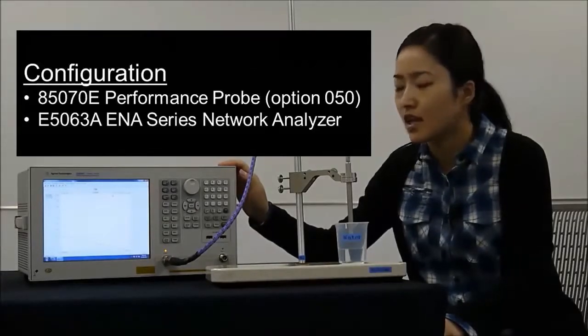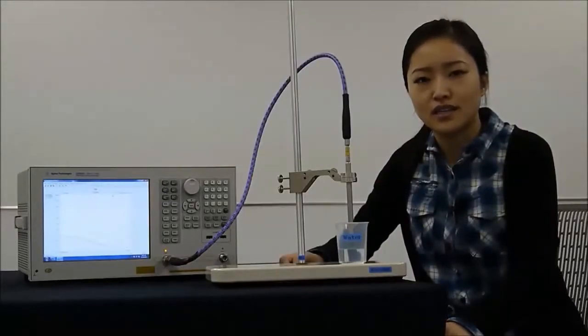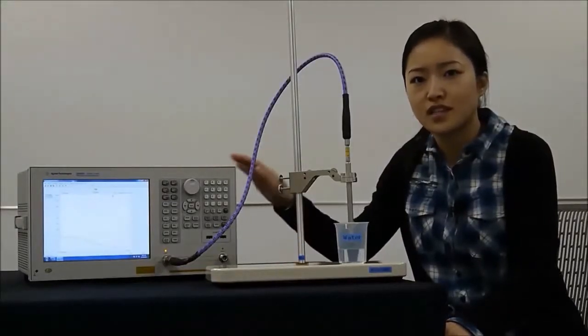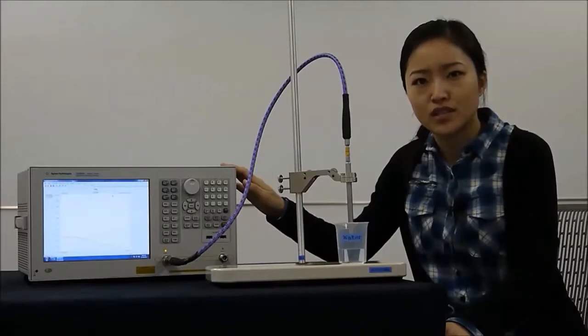For our demonstration here we will use a coaxial probe and an E5063A ENA Series Network Analyzer. The measurement software can run on an external PC or directly on the network analyzer. The software is used to calculate permittivity from the reflection coefficient measurements.